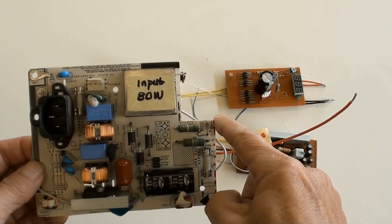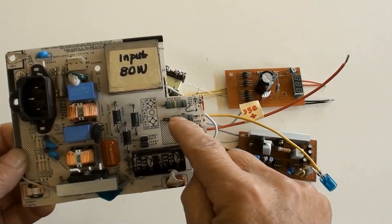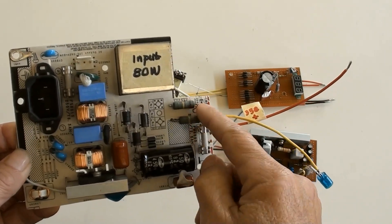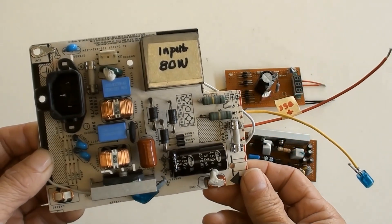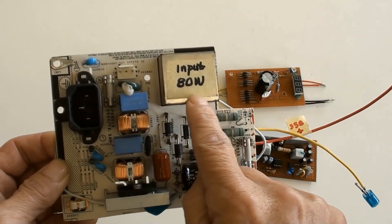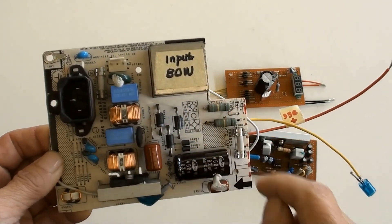This part has been cut off to make a room for the ferrite transformer. And those are the startup resistors for UC 3843AN. Input power consumption is 80 watt.